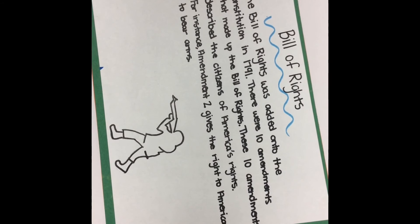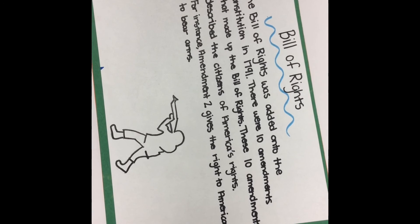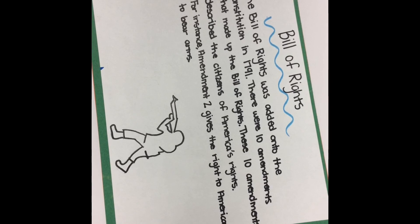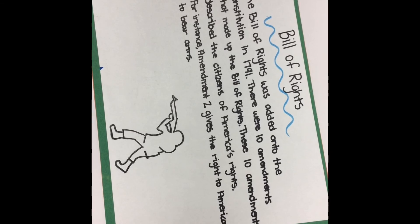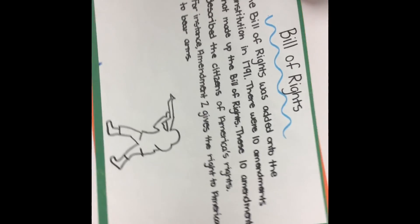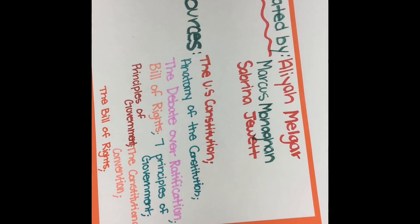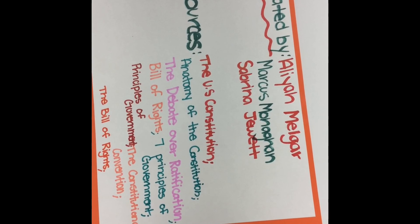The Bill of Rights was added to the Constitution in 1791. There were ten amendments that made up the Bill of Rights. These ten amendments describe the rights of American citizens. For instance, Amendment 2 gives Americans the right to bear arms. Created by Isaiah Lagarde,